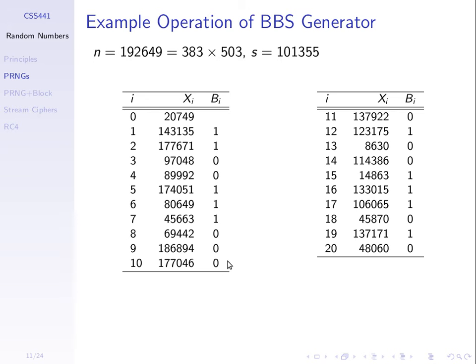The output sequence — 1, 1, 0, 0, 1, 1, 1, 0, 0, 0, 0, 1, 0, 0 — doesn't look very random, but that's just a coincidence with these small example values. This is an example of a pseudo-random number generator that has been analyzed and is considered to generate sequences which exhibit characteristics of true random number generators — and it's quite simple.